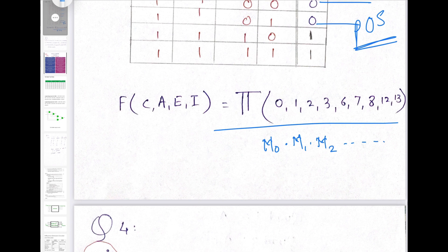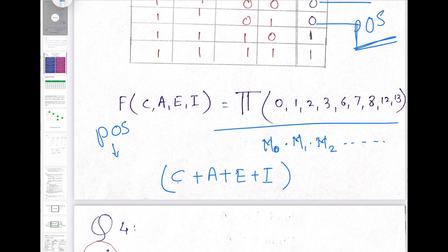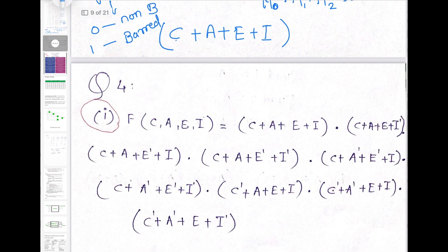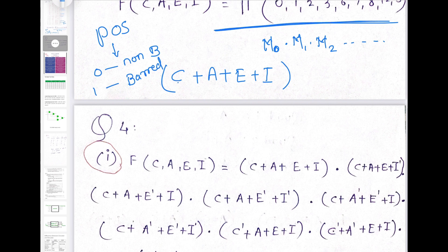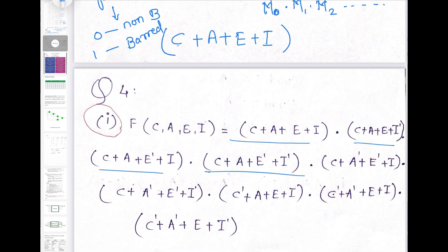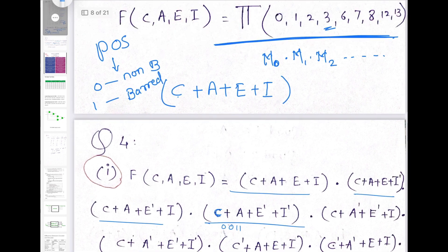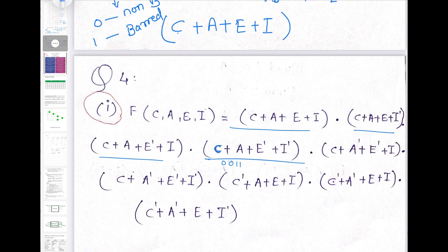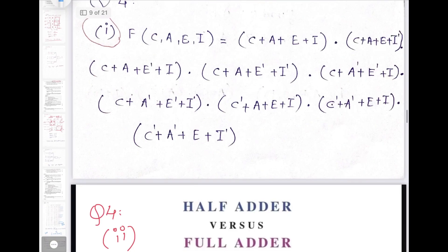M0 will have all four variables: C + A + E + I, because in POS form 0 means non-barred and 1 means barred. For M3, looking at the bit pattern 0, 0, 1, 1, the respective canonical expression is written accordingly. By looking at M0, M1, M2, M3, M6, M7 and so on, we form the canonical expression and write each max term. This is the final answer for writing POS from the given truth table.